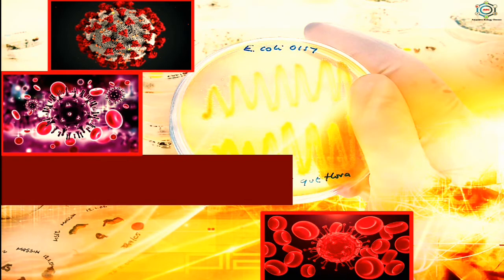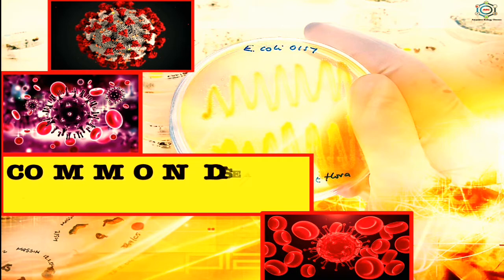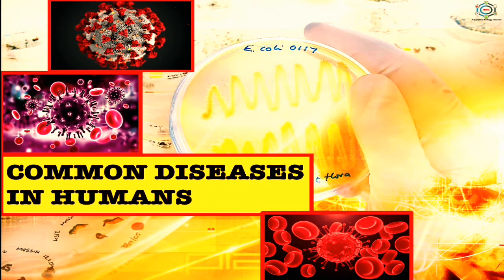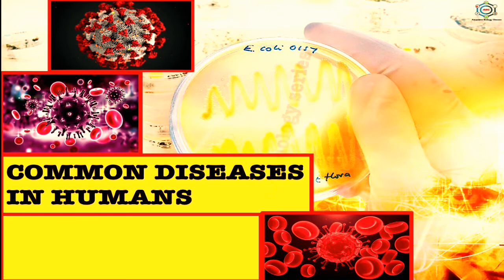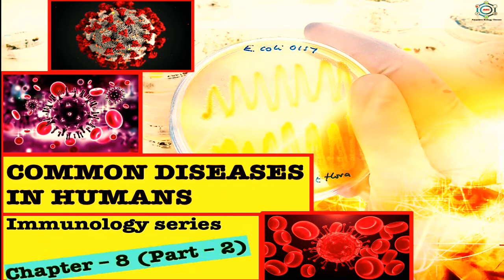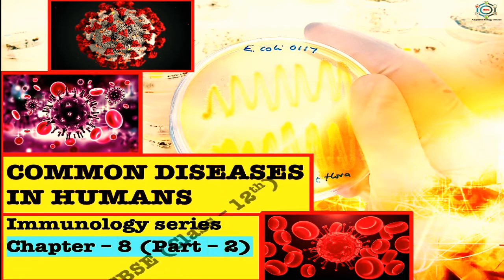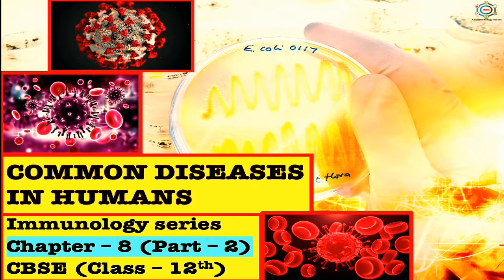Hello everyone, welcome to my channel Anupma Biology Classes. In this video our topic is Common Diseases in Humans, which is taken from Immunology Series Chapter 8 Part 2 of CBSE Class 12th. In the following account, a few representative members from different groups of pathogenic organisms, the diseases caused by them, and the preventive and control measures against these diseases are briefly described.